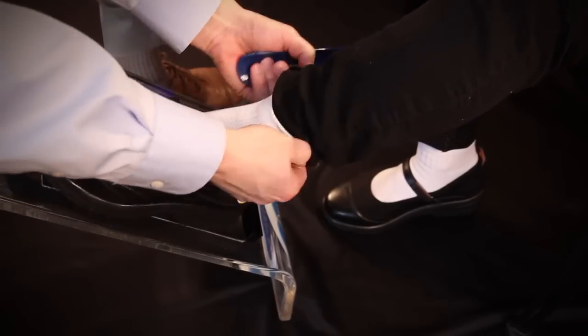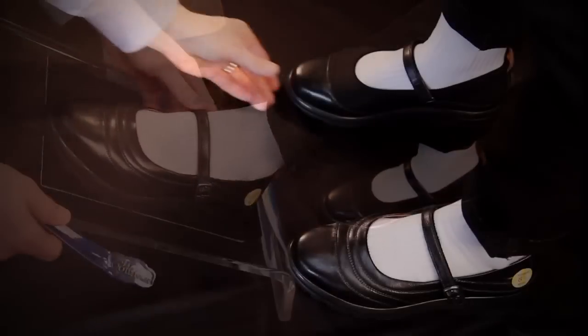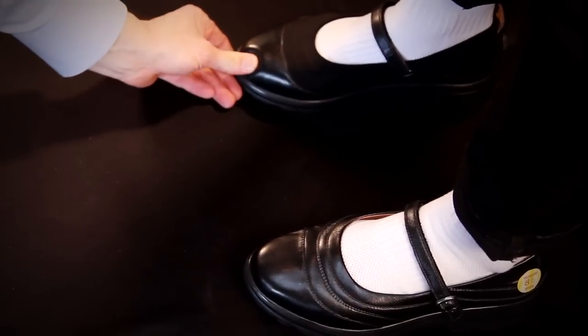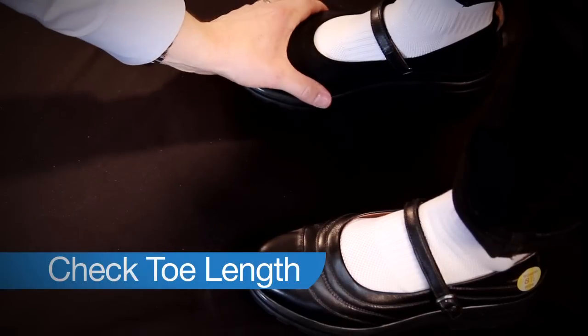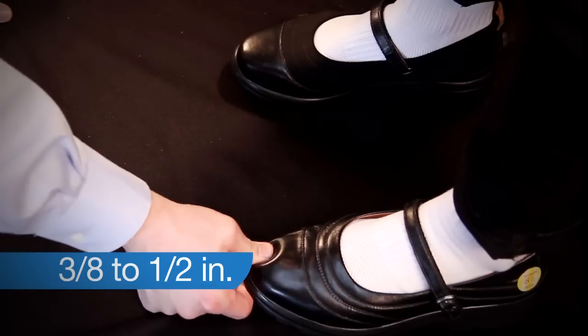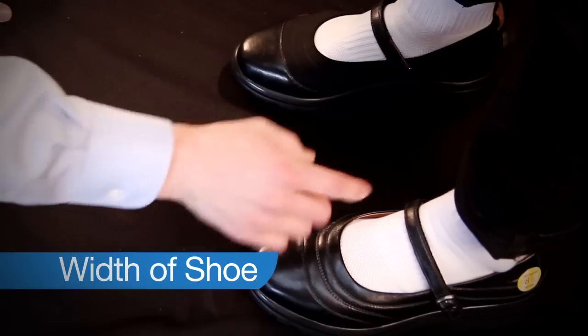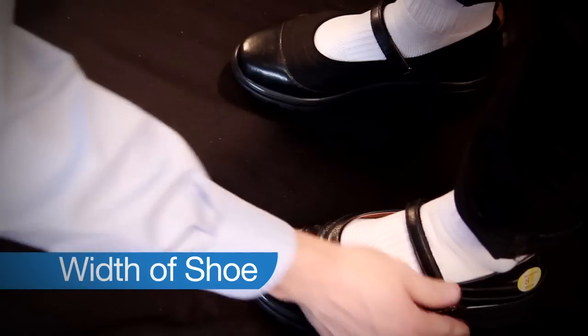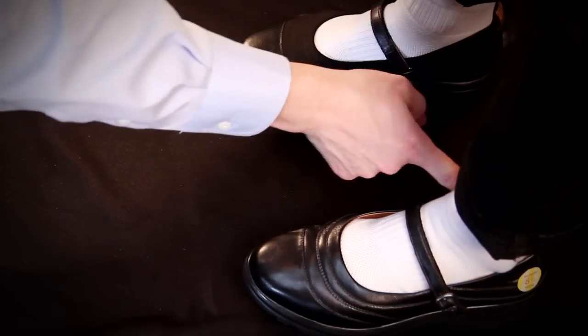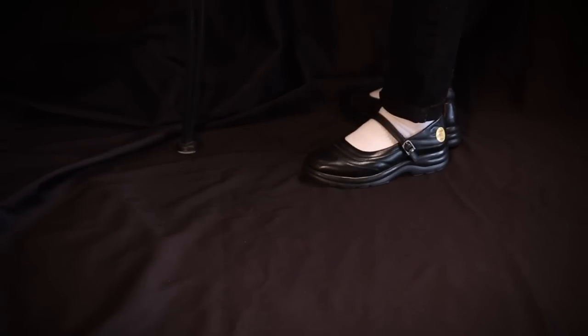Once the patient has put the shoes on, then we will have them walk around. To ensure the shoes fit appropriately, you want to first check the length of the toes, making sure there's at least three-eighths to a half an inch room from the end of the patient's toe to the end of the shoe. Then check the width of the shoe, making sure her metatarsophalangeal joint is at the width of the shoe or the break point of the shoe. As the patient walks around with the shoes on, observe for heel slippage, balance issues, or any discomfort the patient might experience.